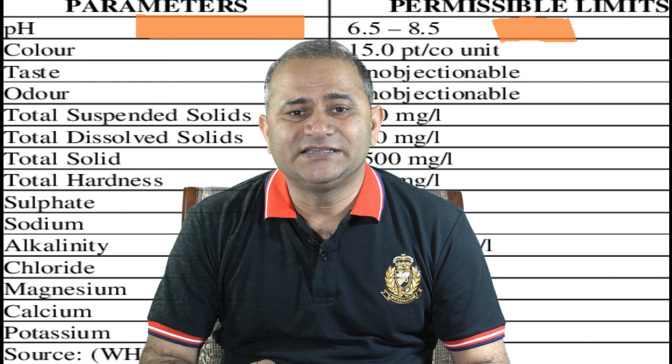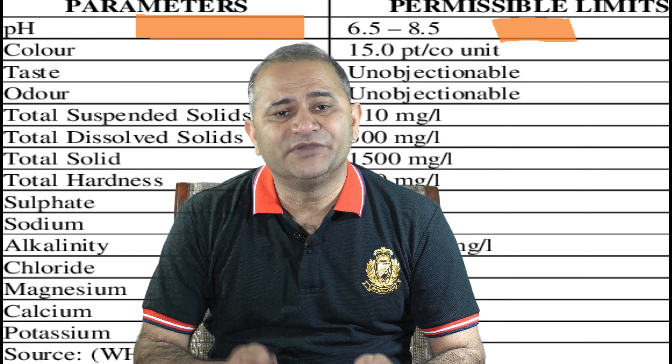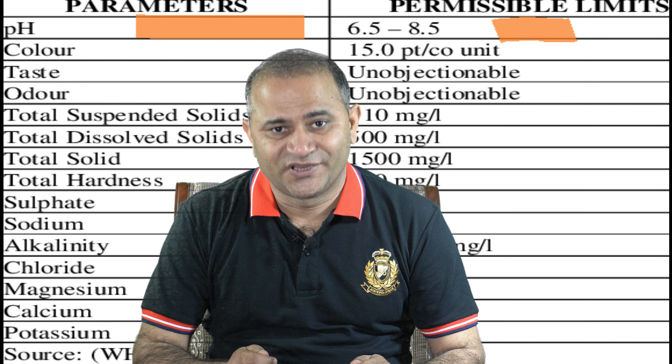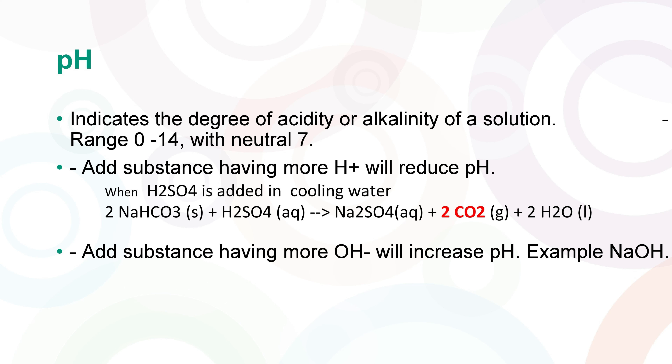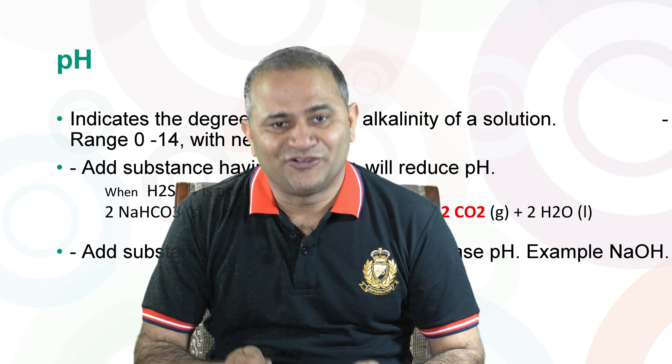In this video we are going to discuss in detail about the pH of water and its impact on water chemistry. According to WHO guidelines, drinking water must be between 6.5 to 8.5. If you have ever noticed, the pH of Nestle water is around 7.1 and surprisingly the pH of Coca-Cola is always less than 4, so pH of water is very very important.